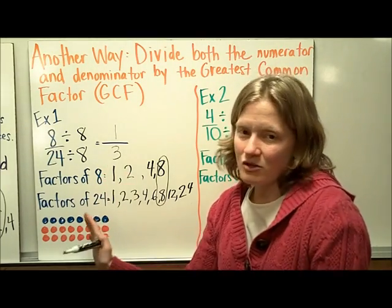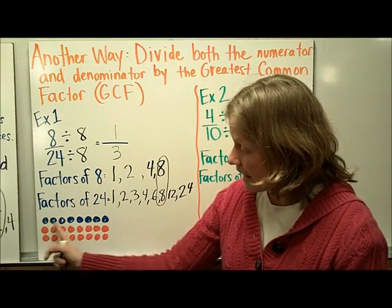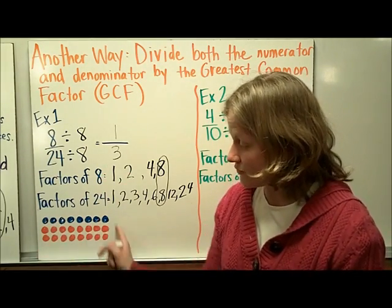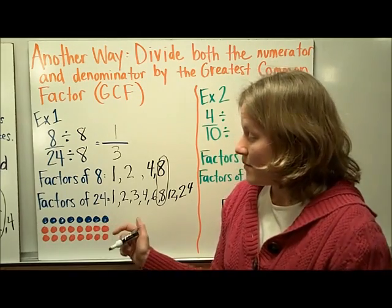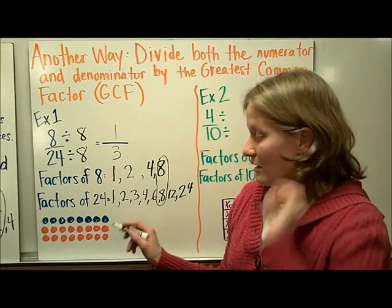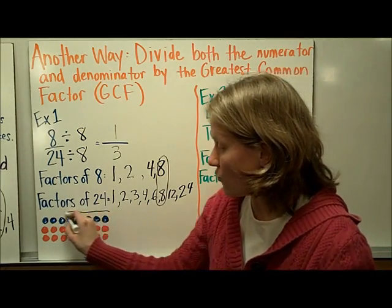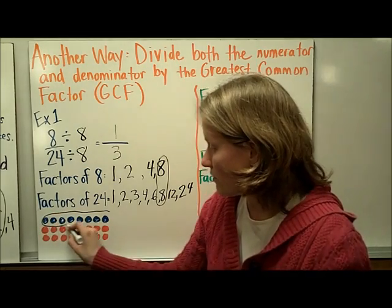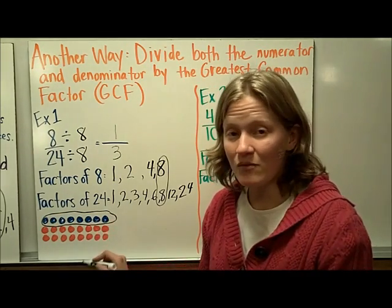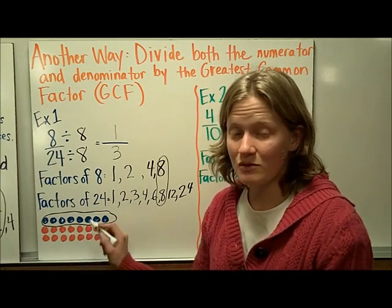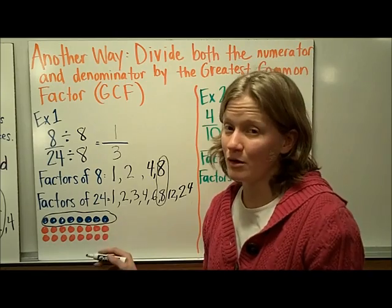Let's look at a picture of what we just did. 8 out of 24 of these circles are blue. But another way to look at it is by rows — 1 row out of 3 rows is blue. So this fraction is equivalent to 1 third.